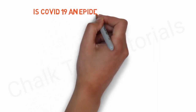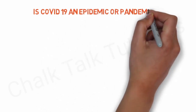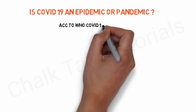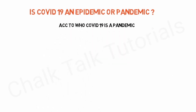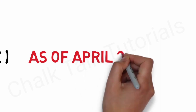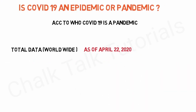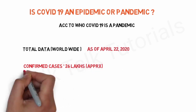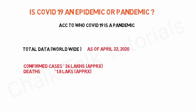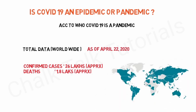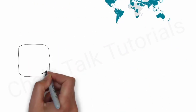The most important question is: is COVID-19 an epidemic or a pandemic? According to the World Health Organization, COVID-19 is described as a pandemic. Looking at data as of April 22, 2020, there are approximately 2.6 million confirmed cases of COVID-19 and approximately 180,000 people have died from it, and it has reached almost the whole world.